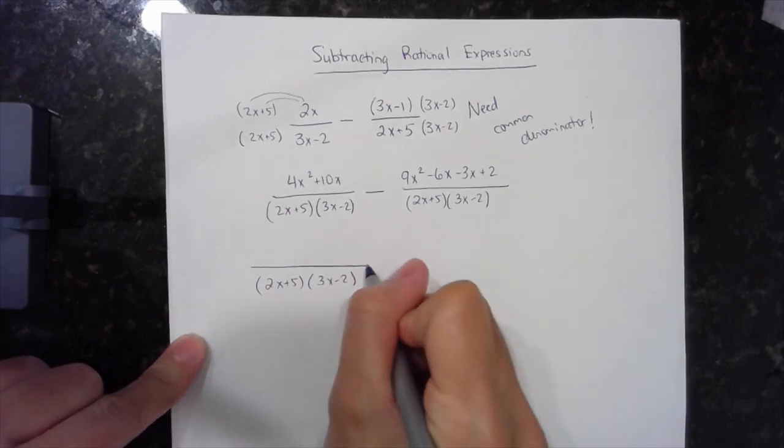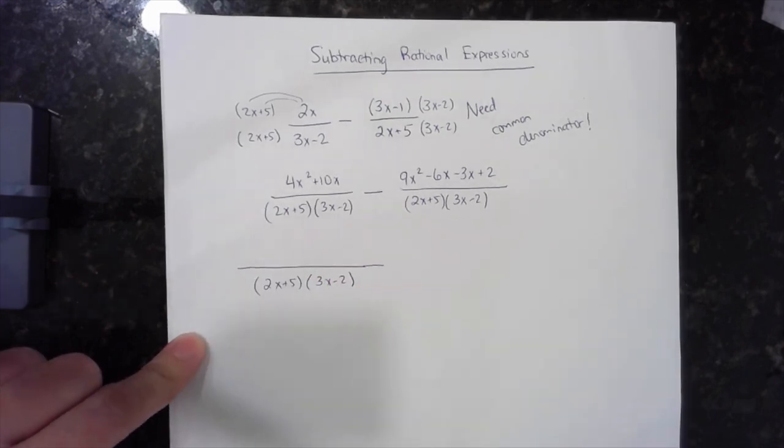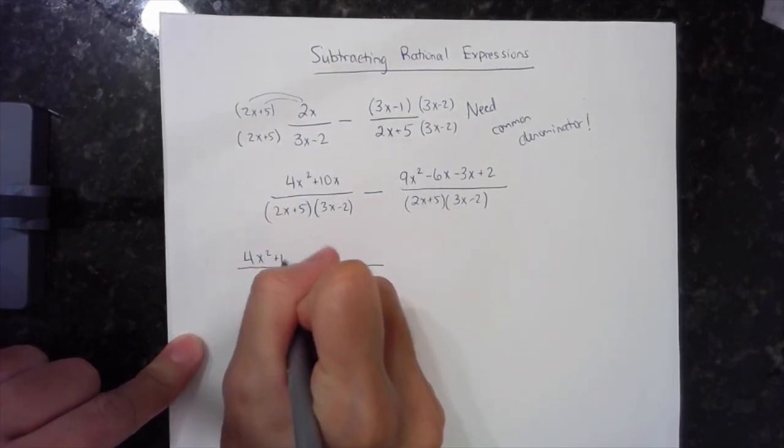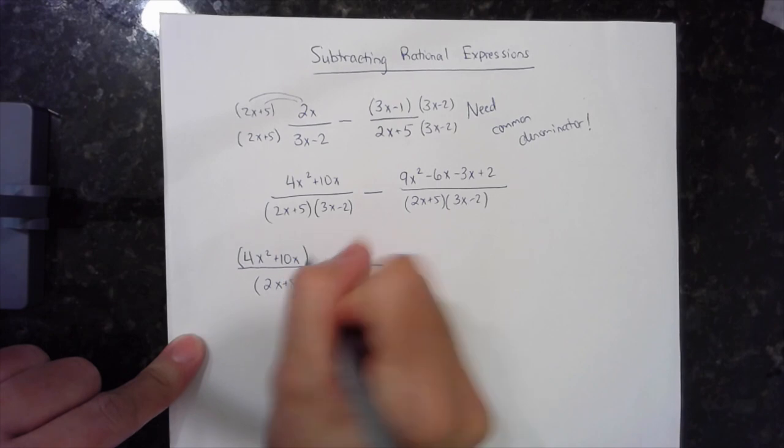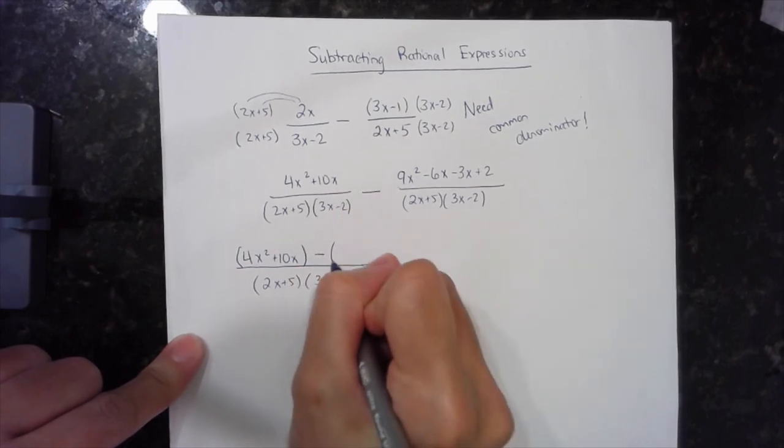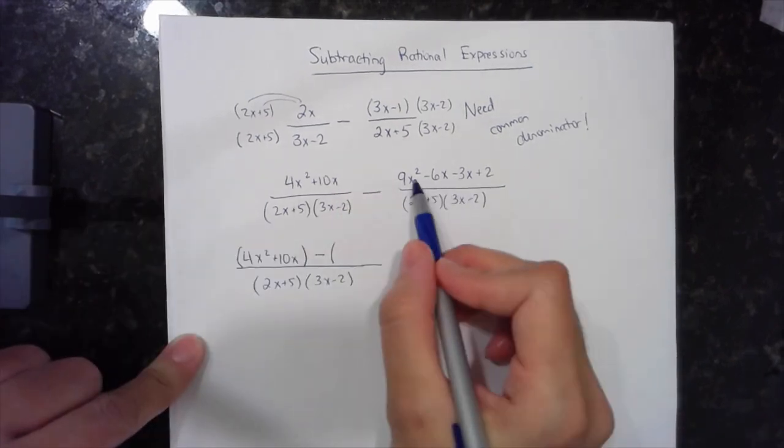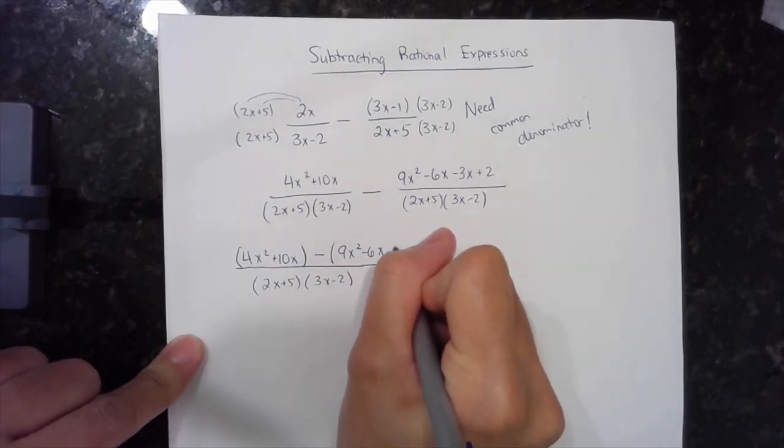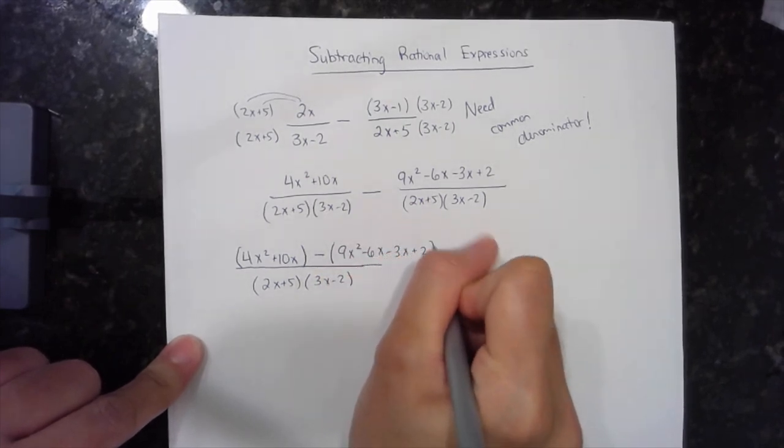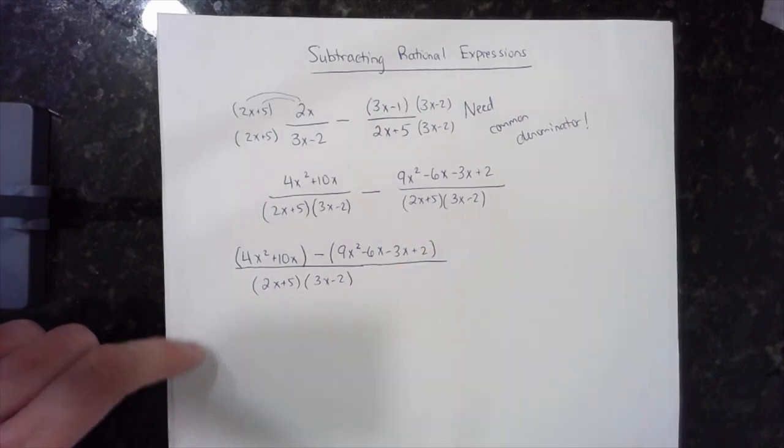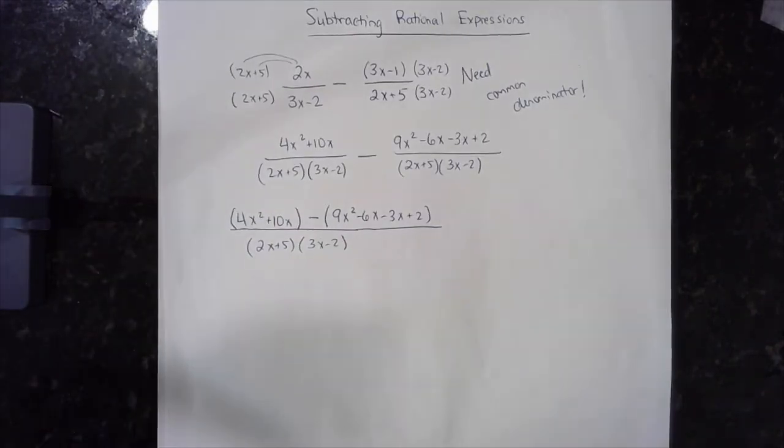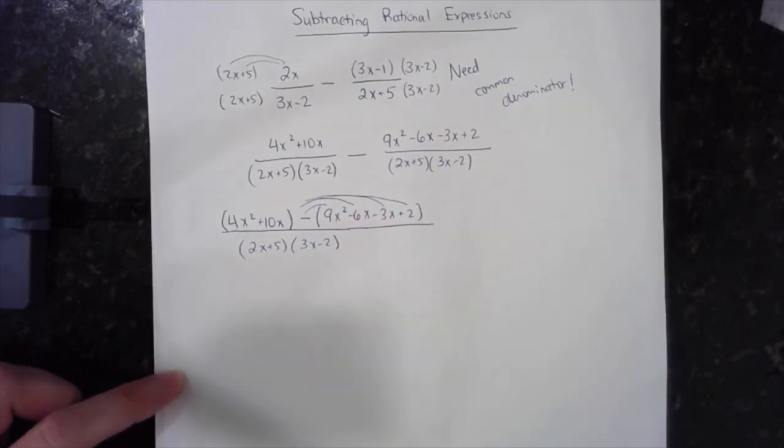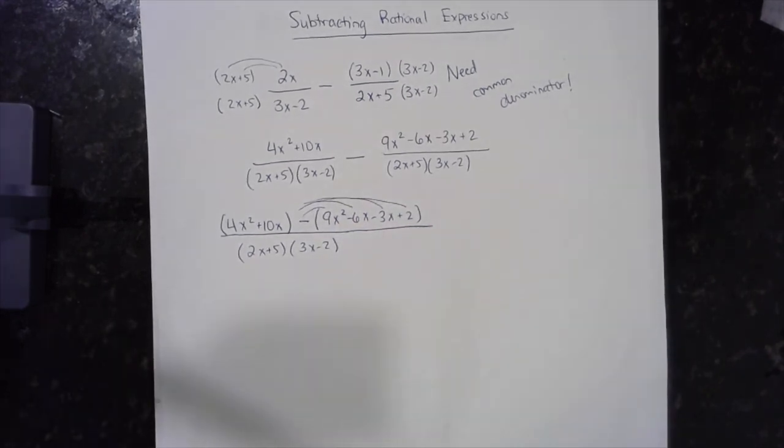Now be careful when you're subtracting rational expressions because we're going to take this first numerator, 4x squared plus 10x, and we're going to subtract the whole polynomial, the whole expression in the second numerator, 9x squared minus 6x minus 3x plus 2. And anytime you subtract a whole polynomial like that, that negative is going to distribute into every term in that second parentheses.